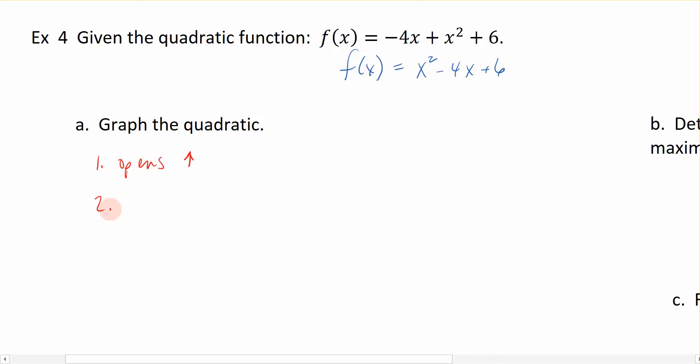The second thing we want to do is determine what the vertex is. The vertex comes from the vertex formula where we take x = -b/(2a). We see that b is -4, so this is -(-4) divided by 2 times a, which is 1. So this is positive 4 divided by 2, or just 2.